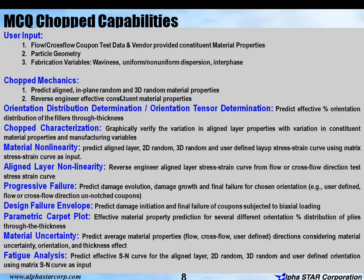The MCQ Chopped capabilities are the following: chopped mechanics, orientation distribution, chopped characterization, material non-linearity, aligned layer non-linearity, progressive failure, design failure envelope, parametric carpet plot, material uncertainty, and fatigue analysis. These are the different models available in MCQ Chopped software.